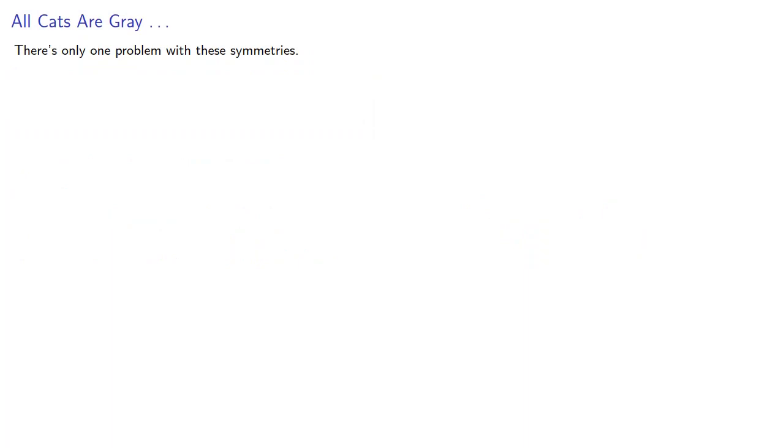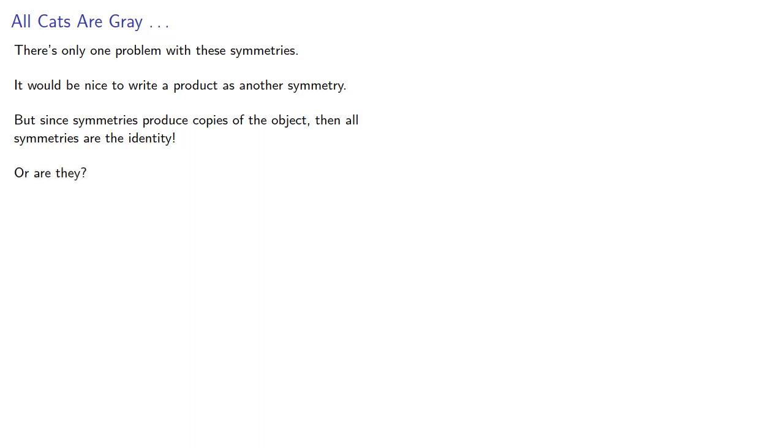Now, there's only one problem with these symmetries. It would be nice to write a product as another symmetry. But since symmetries produce copies of the object, then all symmetries are the identity. Or are they? We hope not, because a group consisting of just the identity is not very interesting.